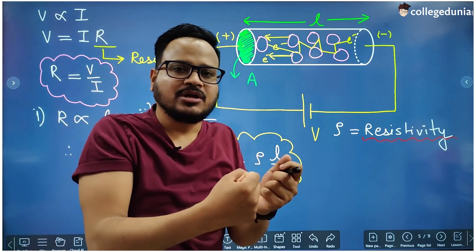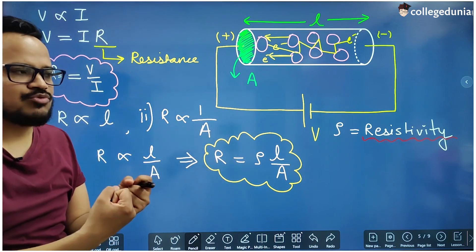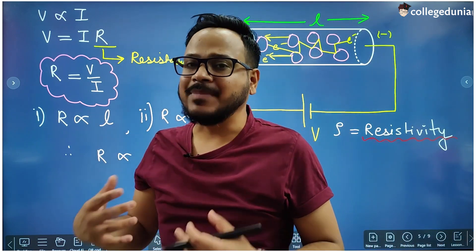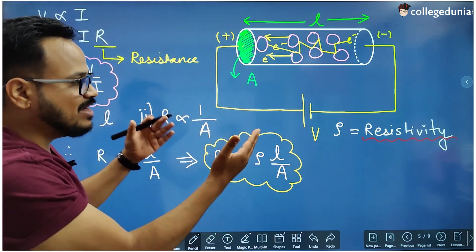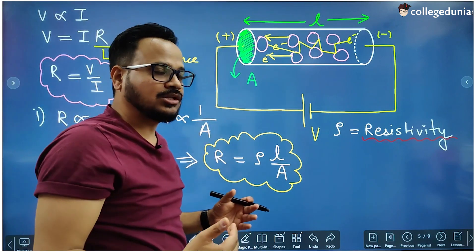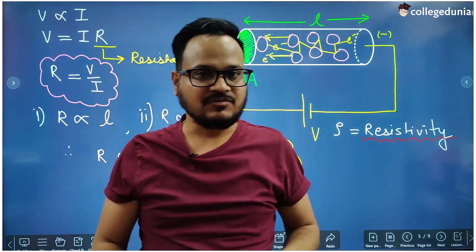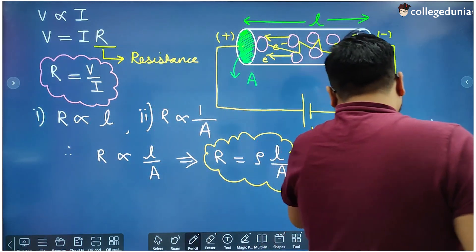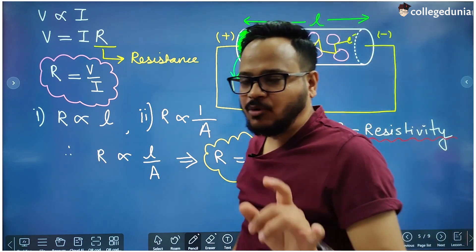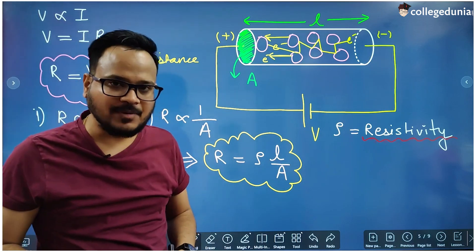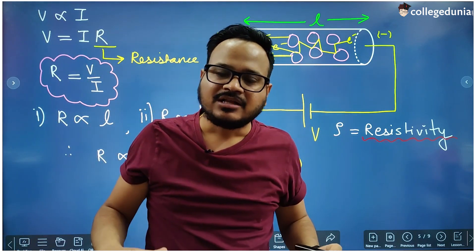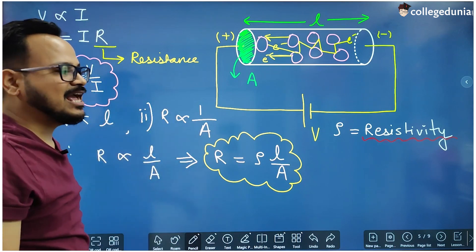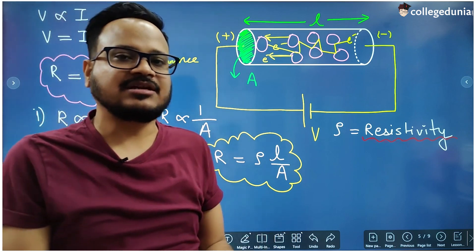For example, we cannot flow current through insulators because insulators have a high value of resistivity. Metals are good conductors because they have a low value of resistivity — so more current can flow. Resistivity depends only on the nature of the material, not on the dimensions. If you have five pieces of copper of different lengths and areas, each will have a different resistance, but all will have the same resistivity since they are all made of copper.